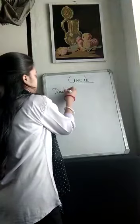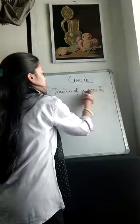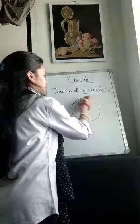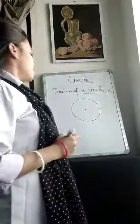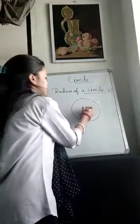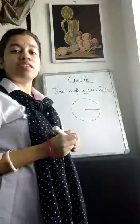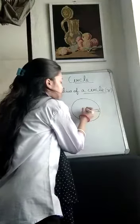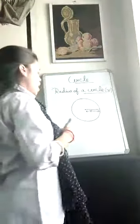Next is radius of a circle. We represent radius by small r. For this, first we draw the circle and make a center point. Radius is the distance between the center point of a circle and any point on the circle.